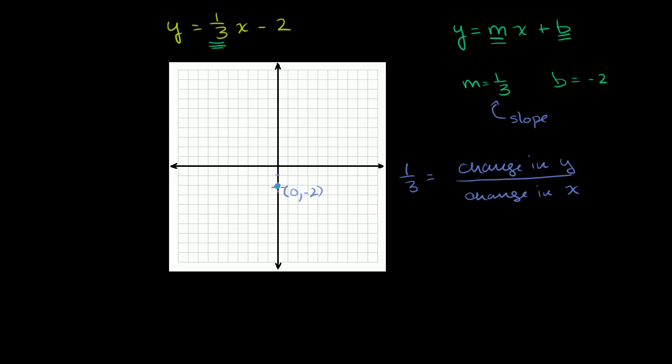Let me graph that. We know this point is on the graph - that's the y-intercept. The slope tells us that if x changes by 3, let me go 3 to the right - 1, 2, 3 - then y will change by 1. So this must also be a point on the graph.